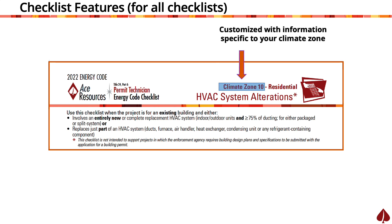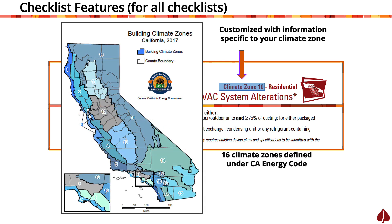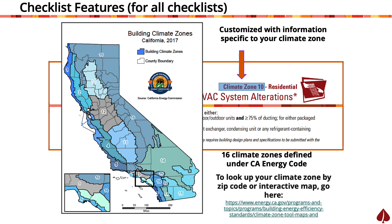Each checklist will show Energy Code requirements specific to your climate zone. When you review project submissions for climate zone 10, ensure that your set of permit technician checklists all indicate climate zone 10. If the scope of your job covers more than one climate zone, keep a set of checklists for each climate zone on hand. Not sure where a submitted project permit's climate zone is? The California Energy Commission provides a way to find it by interactive map or zip code on their website.